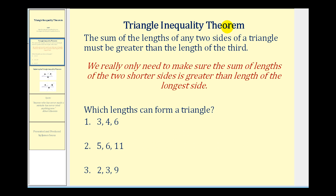The Triangle Inequality Theorem tells us that the sum of the lengths of any two sides of a triangle must be greater than the length of the third. If this is not the case, we actually can't form a triangle.